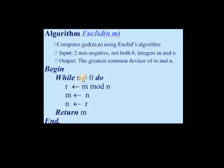The condition is: till the second number becomes zero, N is not equal to zero — do it. We divide the first number by the second number; mod stands for modulus, meaning we get the remainder. Then first number becomes second number, second number becomes remainder. Repeat these three instructions till the second number becomes zero. Whenever the second number becomes zero, stop and return the first number as GCD.